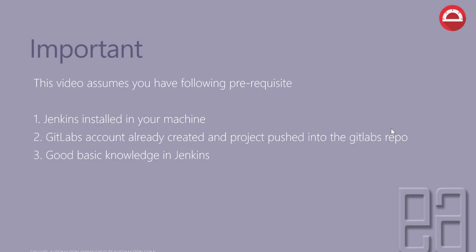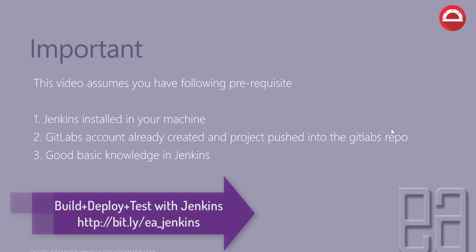Before starting this video, I assume you already have the following prior knowledge: Jenkins already installed on your machine — if not, I'll quickly show you how to download Jenkins. You also need a GitLab account already created with your project pushed into GitLab's repository. In your companies you'll usually have all these things set up for you; all you have to do is provide the URL and authentication to start working with it. You also need a basic knowledge of Jenkins.